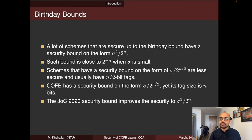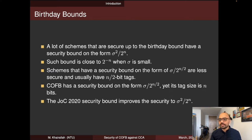A few observations motivating this work relate to schemes secure up to the birthday bound. Many such schemes have a security bound of the form σ²/2ⁿ, which is close to 2 to the minus n when σ is small. On the other hand, schemes with a bound of the form σ/2^(n/2) are less secure and usually have n/2-bit tags. COFB has a security bound on this latter form, yet its tag size is n bits. Moreover, the Journal of Cryptology 2020 bound improves security to σ²/2ⁿ, raising questions about whether this improvement is correct and whether it can be adopted for GIFT-COFB.